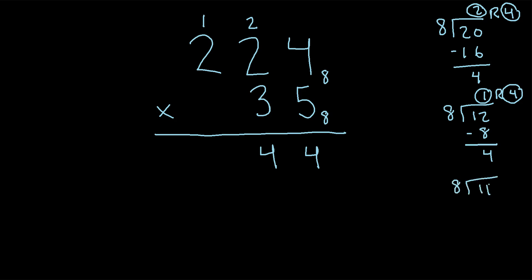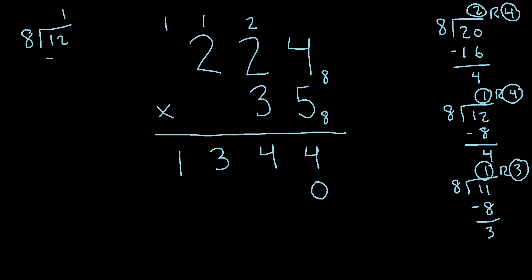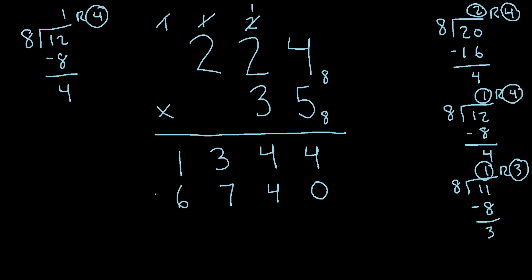Next, 5 times 2 plus 1: five times 2 is 10, plus 1 is 11. How many eights go into 11? Just 1. Eleven minus 8 is 3, so the remainder 3 is written here and the 1 carries all the way down. Now we move to the 3, with a placeholder zero. Three times 4 is 12 — how many eights go into 12? Just 1. Twelve minus 8 is 4, remainder 4 written here, 1 carries. Three times 2 is 6, plus 1 is 7 — seven goes here. Three times 2 is 6.